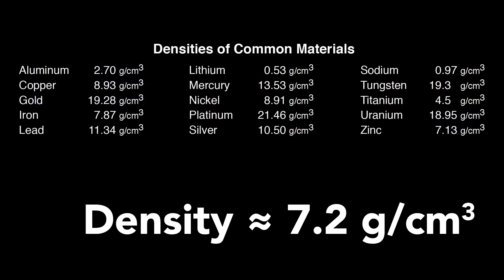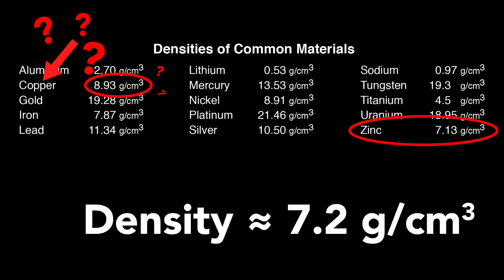If we check our handy density chart, we can see that 7.2 is a good match for zinc. Wait a second, we hear you say — pennies are copper! 7.2 grams per cubic centimeter is way too low. To which we say: pennies used to be copper. They started making them out of zinc in 1982, and all of these are newer pennies. So yeah, they're mostly zinc.